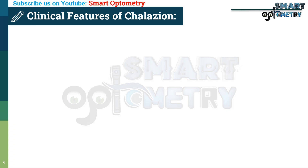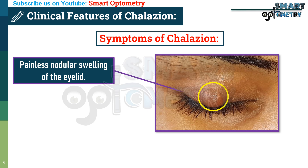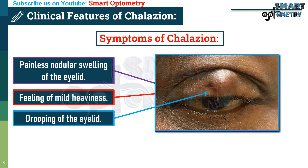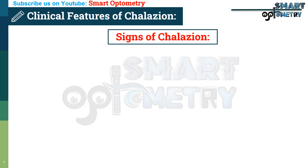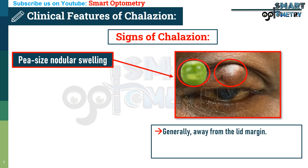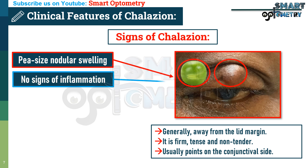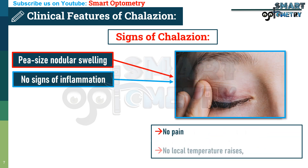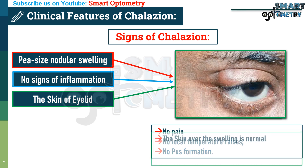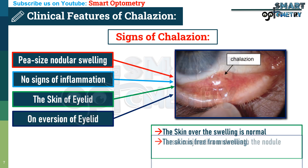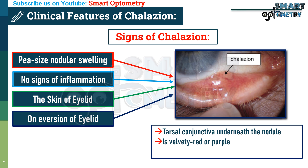What are the clinical features of chalazion? Symptoms include painless nodular swelling of the eyelid, feeling of mild heaviness, and drooping of the eyelid. Signs: a small pea-sized nodular swelling, generally away from the lid margin, that is firm, tense, and non-tender. It usually points on the conjunctival side and rarely on the skin side. There are no signs of inflammation — no pain, no local temperature rise, no pus formation. The skin over the swelling is normal and free from the swelling.